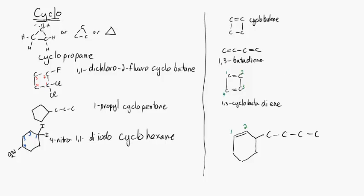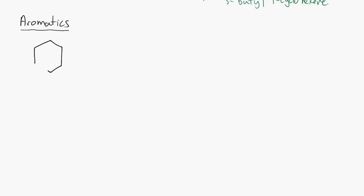Here's cyclohexene, beginning at the double bond, number through the double bond. We have a butyl side group, 3-butyl cyclohexene.